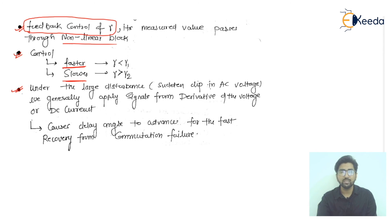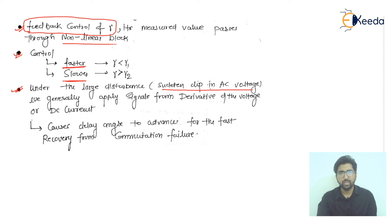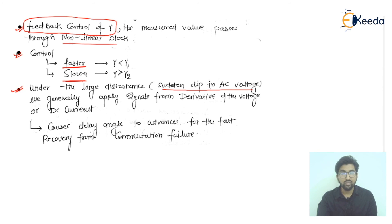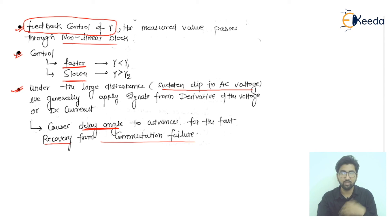Under large disturbance conditions — such as a sudden dip in AC voltage — we find the derivative of the voltage or the DC current and apply that signal, which causes the delay angle to advance for fast recovery from commutation failure. I hope you have understood this lecture. Thank you.